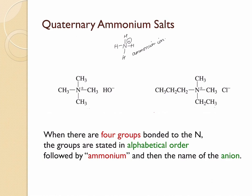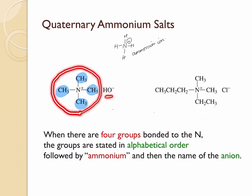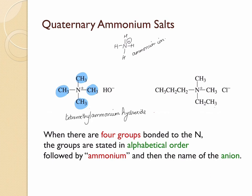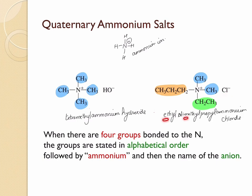Here is an example where the chloride ion is the counter ion. For naming, if there are four methyl groups on the nitrogen, this is called tetramethylammonium ion. With a hydroxide counter ion, it becomes tetramethylammonium hydroxide. For the next compound with two methyl groups, one ethyl group, and one propyl group, we list them in alphabetical order: ethyl dimethyl propyl ammonium chloride, since chloride is the counter ion. All alkyl groups are alphabetized.